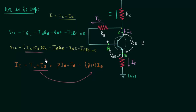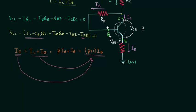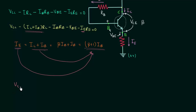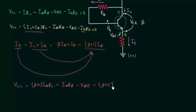We can replace IC plus IB with (β + 1)·IB, and also the emitter current IE equals (β + 1)·IB, so we replace IE with (β + 1)·IB. The equation then becomes: VCC minus (β + 1)·IB·RC minus IB·RB minus VBE minus (β + 1)·IB·RE equals 0.